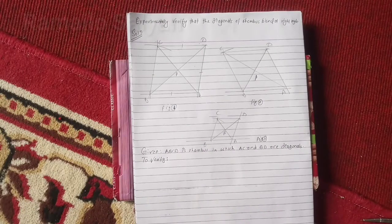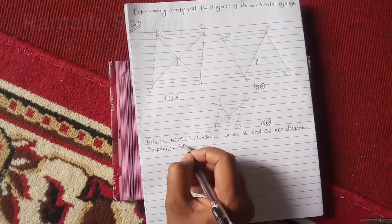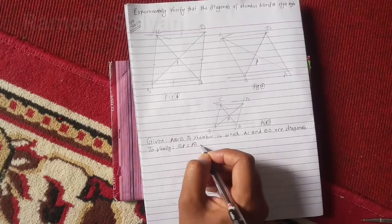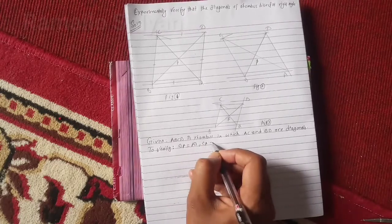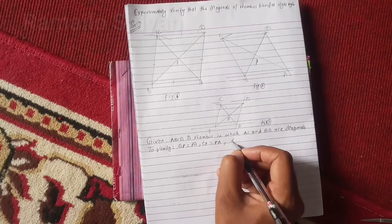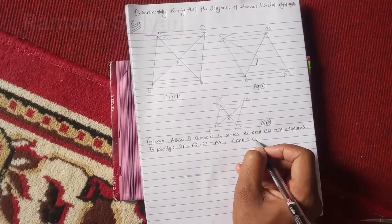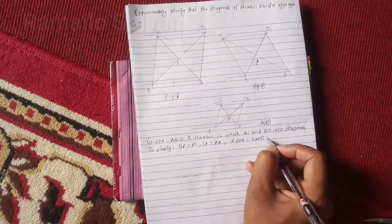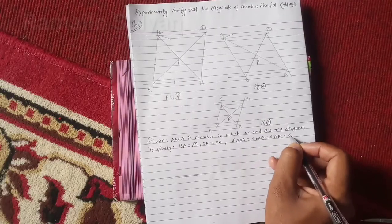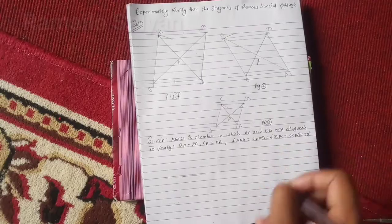So we need to verify: BP = PD, length of CP = PA, and angle BPA = angle APD = angle DPC = angle CPB = 90 degrees.